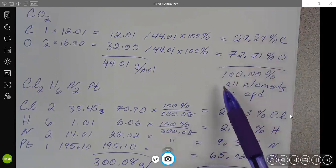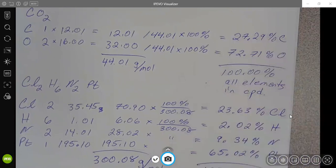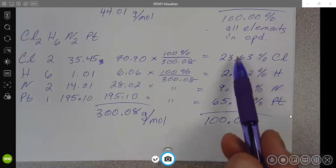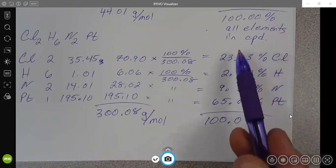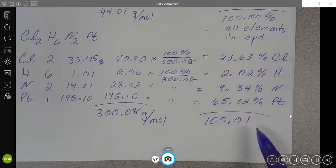Whenever you have more than two elements, it's always a possibility that just because of rounding here, you might not get exactly 100 here at the end.